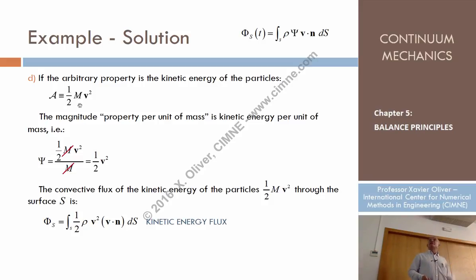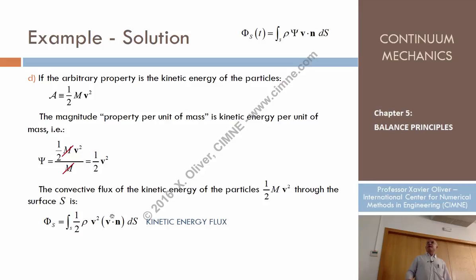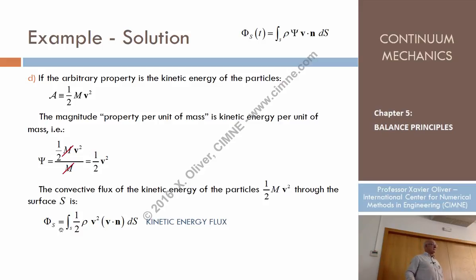What about kinetic energy? The kinetic energy of particles is one half of mass times velocity squared. So the specific content is one half times m·v² divided by mass, giving one half of v². The convective flux is then the integral of rho times one half of v² times B·n differential of S. Now, what is v²? It stands for v dot v — the modulus of the velocity — which is a scalar. So the kinetic energy flux is also a scalar.